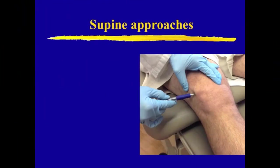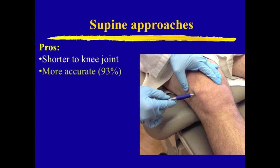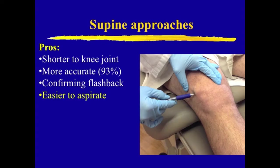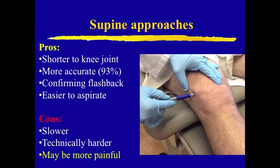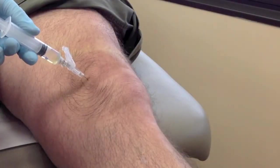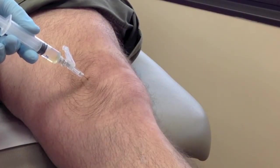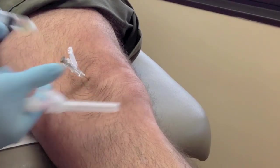To summarize the supine approach, whether medial or lateral or mid-patellar or suprapatellar, the supine approach offers a shorter distance to the knee joint and is more likely to reach the intra-articular space accurately. Thus, you are more likely to confirm the joint space with a synovial flashback and be able to aspirate an effusion more completely. However, the supine approach is slower and technically more difficult to learn, and may be more painful for patients. But once you learn the technique and become fairly adept, the supine approach can be as painless as the seated approach for your patient.